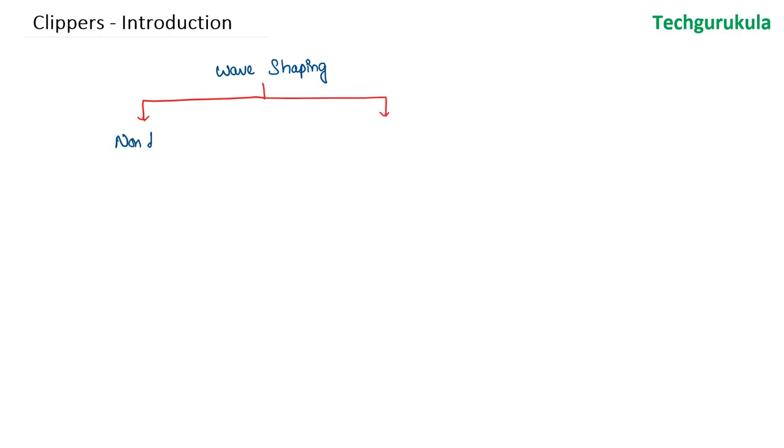One is non-linear and the other one is linear. So in non-linear wave shaping, we use non-linear elements like diodes. When we say diodes, including Zener diodes and at times transistors as well. So these are done with non-linear elements.